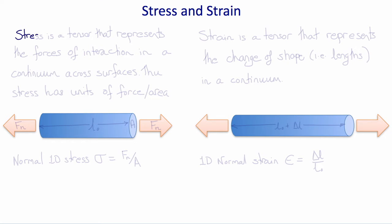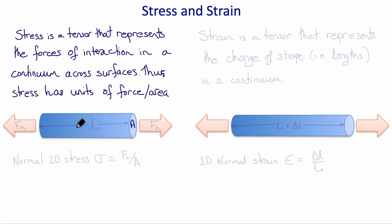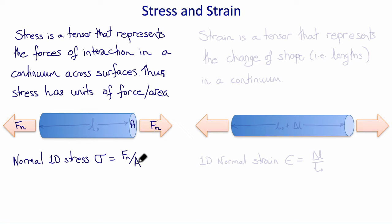Let's start by looking at the concepts of stress and strain in one dimension so we don't have to worry about the fact that they are tensors. Stress is a tensor that represents the forces of interaction in a continuum across surfaces, and therefore stress has units of force per area. Considering tension applied to a cylindrical sample with cross-sectional area A and forces normal to that cross-section Fn, the normal one-dimensional stress sigma is Fn divided by A — a so-called tensile stress.